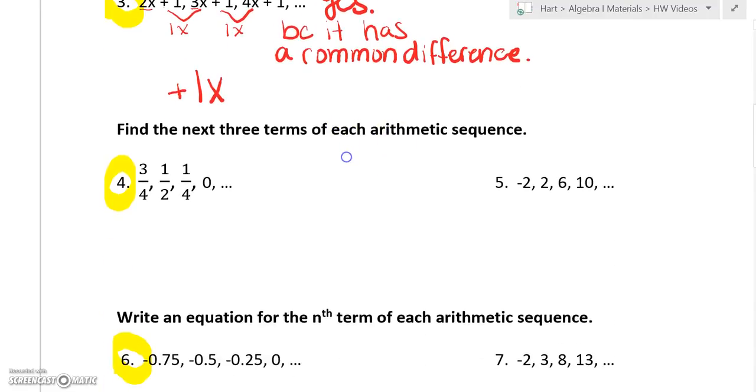The next one says find the next three terms of each arithmetic sequence. For number four, first let's start by seeing how much it adds or subtracts. On this one from three-fourths to one-half it's getting smaller, so we know it's going to subtract, and it's going to subtract one-fourth.